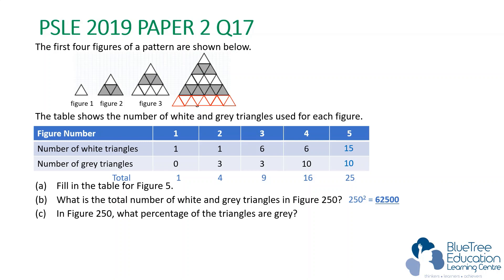Part C: in figure 250, what percentage of the triangles are gray? This question is difficult. You have to find a pattern for the gray triangles. We can't simply look at the number of gray triangles — we have to look at the difference between the white triangles and the gray triangles. In figure 1, the difference is 1; in figure 2, the difference is 2; in figure 3, the difference is 3; in figure 4, the difference is 4; and for figure 5, the difference is 5.